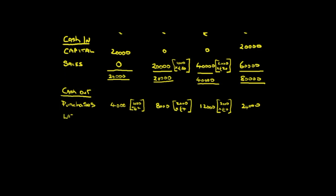Labour costs are next — this is the money we're going to pay ourselves. We agreed this in advance, so we know for sure that's what we're going to get out of the business for working in it. That's 24,000 as well, coincidentally. The next cost is the overhead cost — other costs like rent, insurance, telephone bills, marketing, all sorts of costs we might have to incur. We worked that out and we expect that's going to cost 11,000 and 11,000, adding up to 31,000.